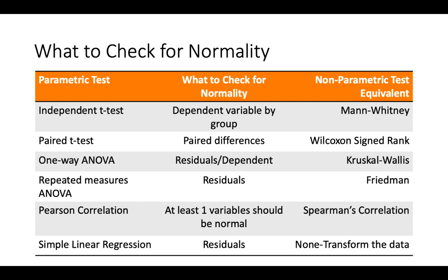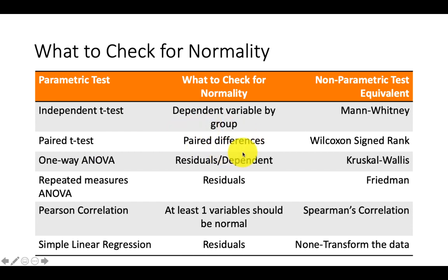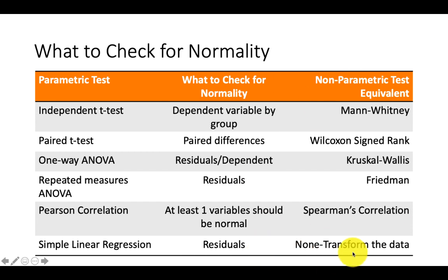What do you check for normality for each test? If you proceed with independent t-test, paired t-test, or one-way ANOVA, you check the dependent variable by group. For the paired t-test, check the paired differences. For ANOVA, check the residuals or the dependent variable. For Pearson correlation, at least one of the variables should be normal. For simple linear regression, look at the residuals. The non-parametric equivalents apply when these assumptions are not met.